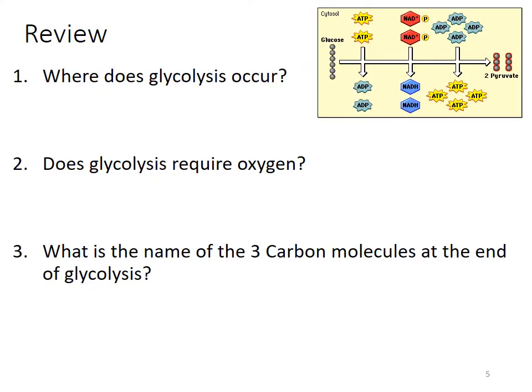Glycolysis occurs in the cytoplasm of the cell. Glycolysis does not require oxygen — oxygen is not a reactant in glycolysis. The two three-carbon molecules at the end of glycolysis are called pyruvate or pyruvic acid.